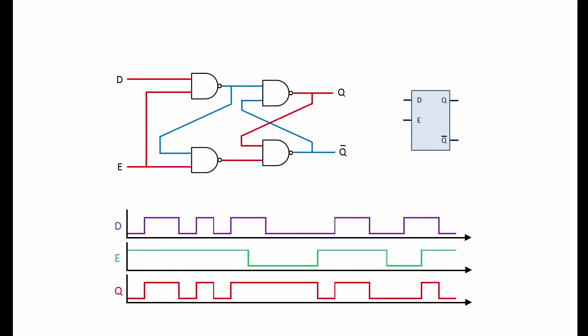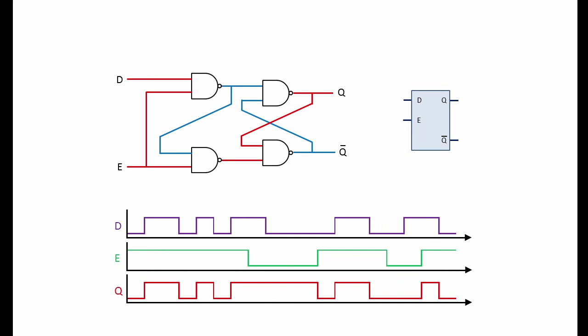We previously saw that while E is high, that is, while the latch is enabled, the output at Q follows the input at D. When E becomes low, Q will retain its current value, no matter what changes are happening at D.